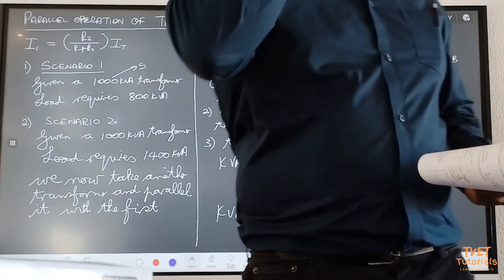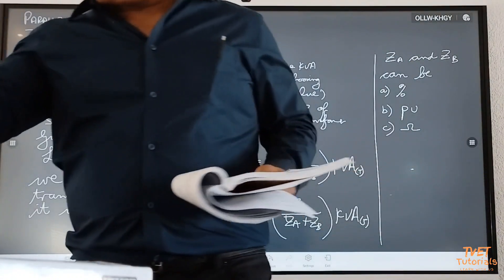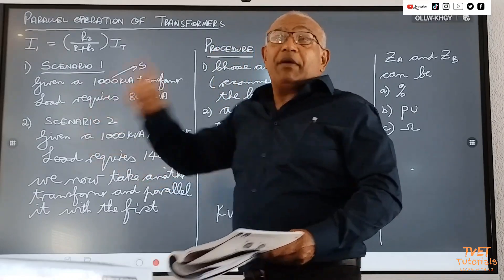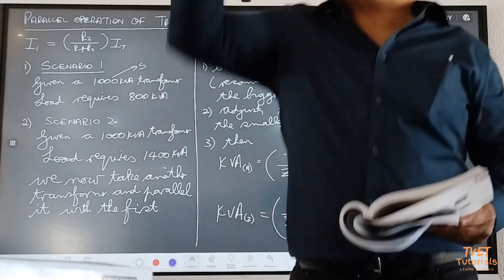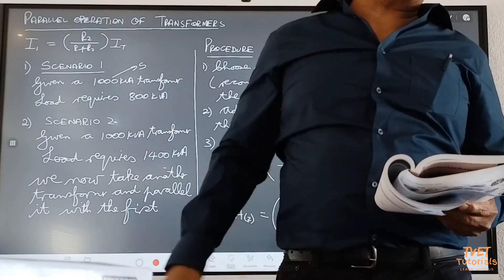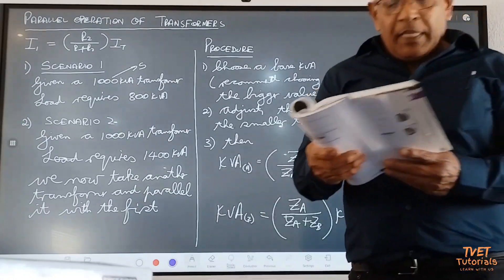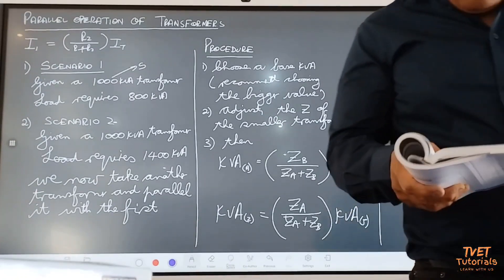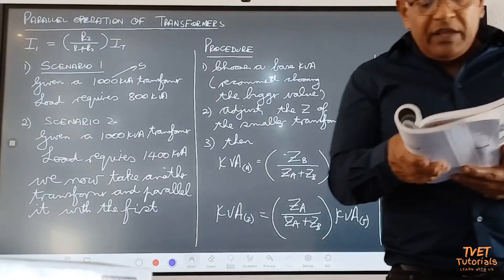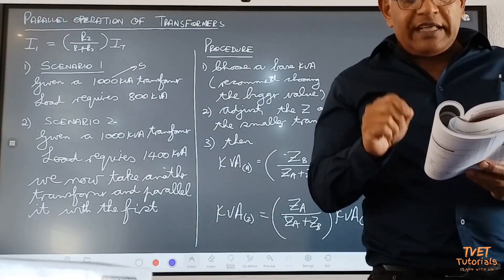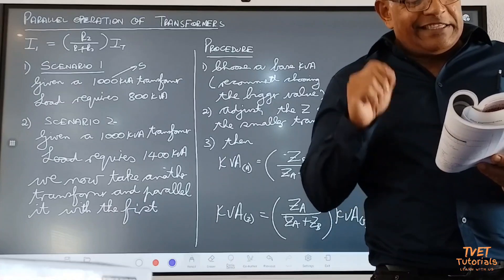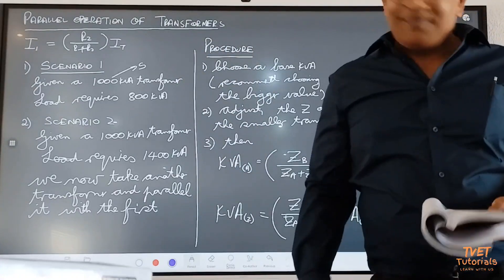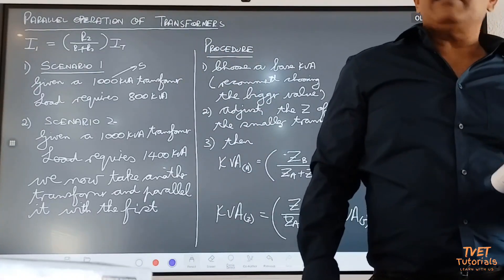Because transformers are rated in kVA, we work only with kVA. Therefore, if the load that needs to be supplied is given in kilowatts, you must convert to kVA — you divide by the power factor. Convert the load to kVA by dividing the power by the power factor.